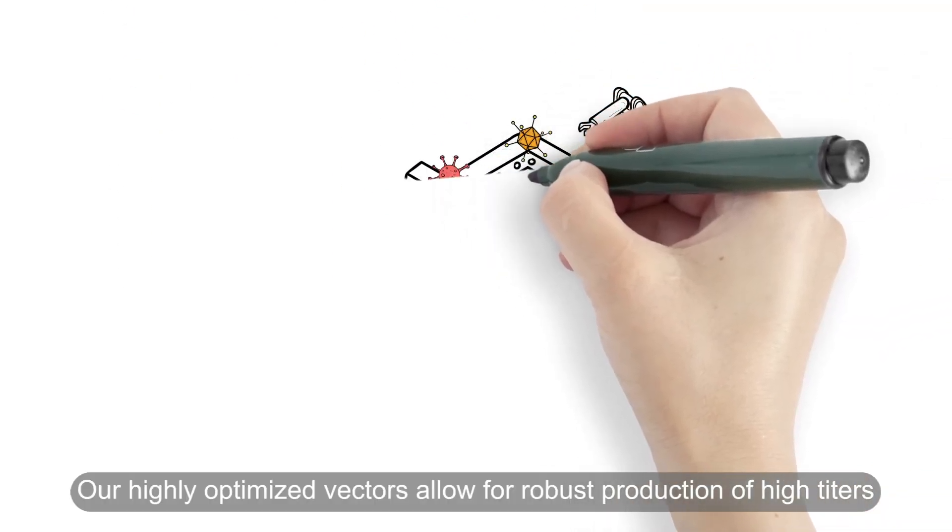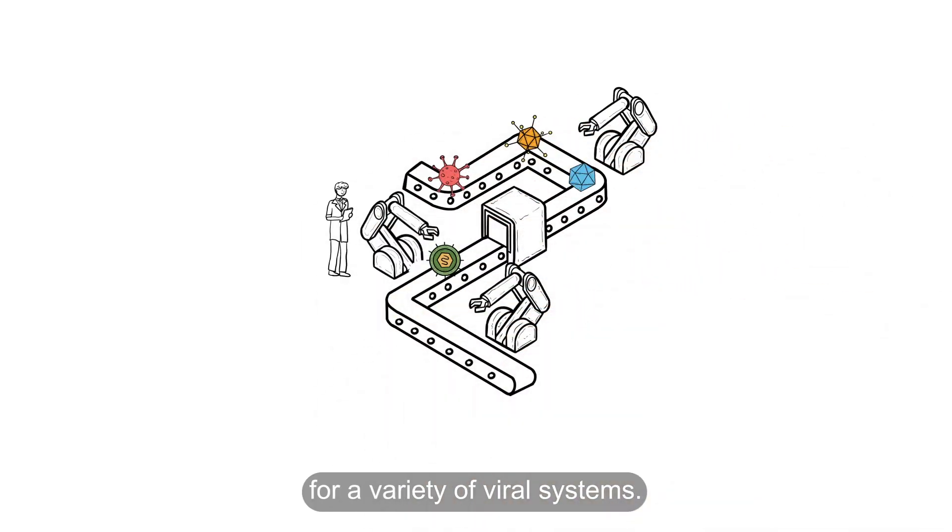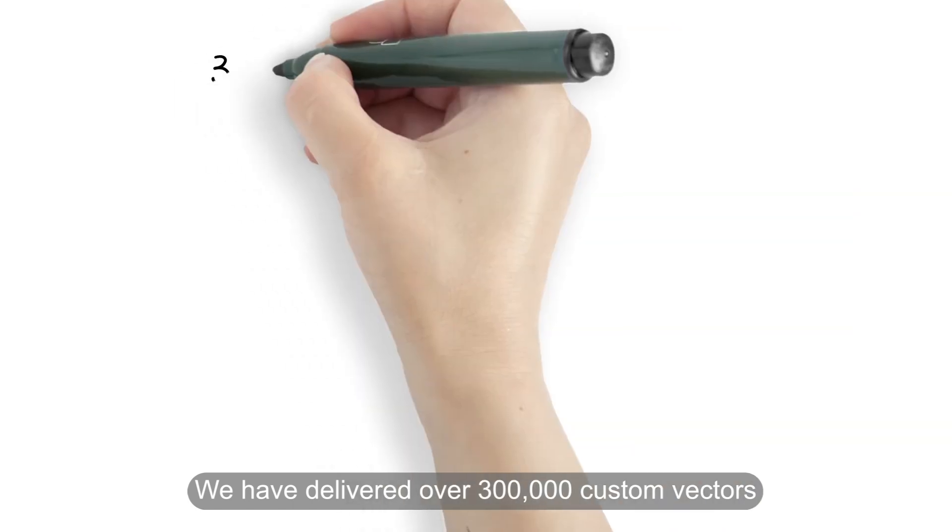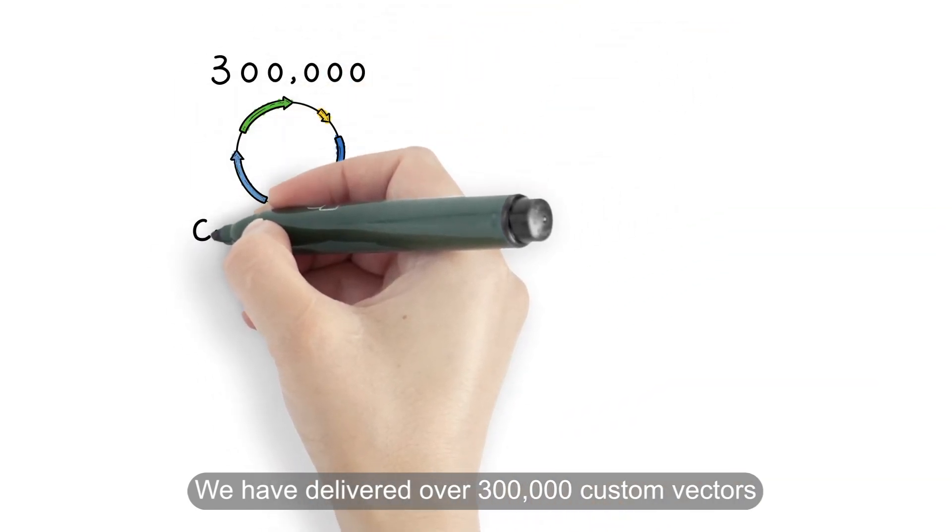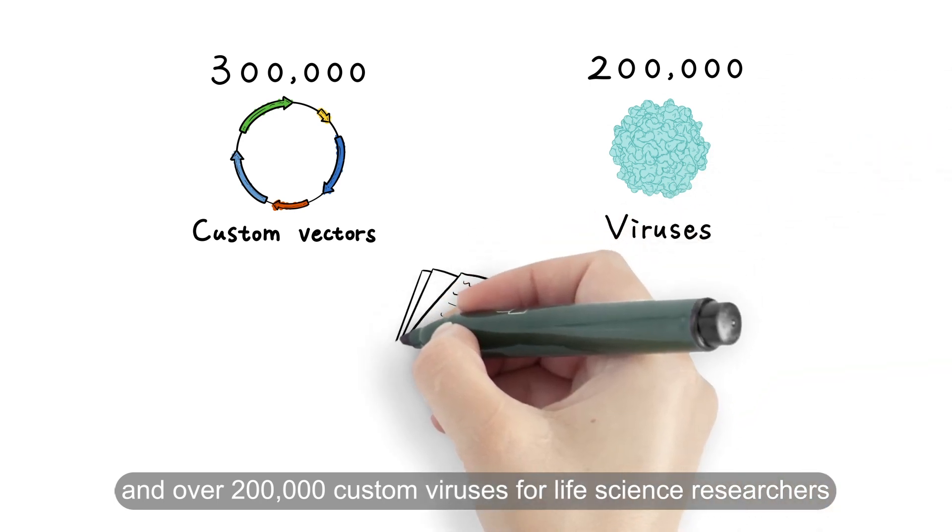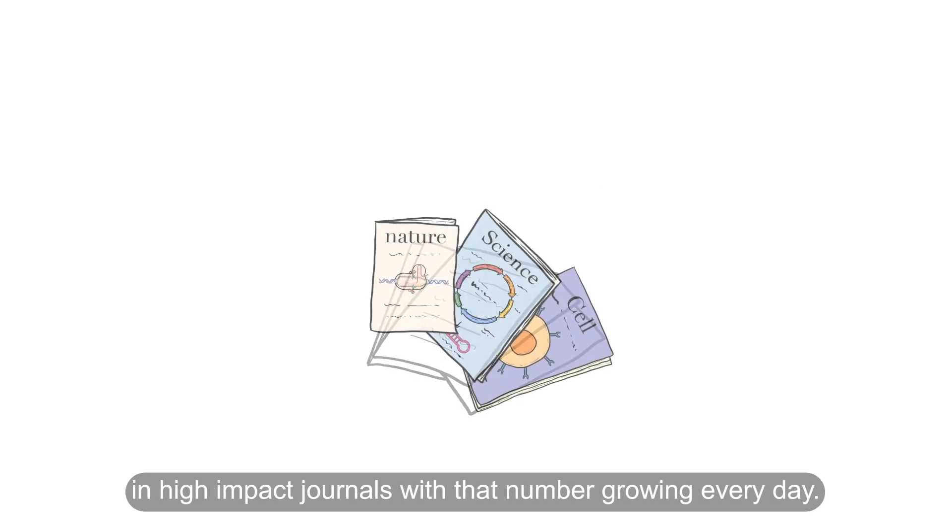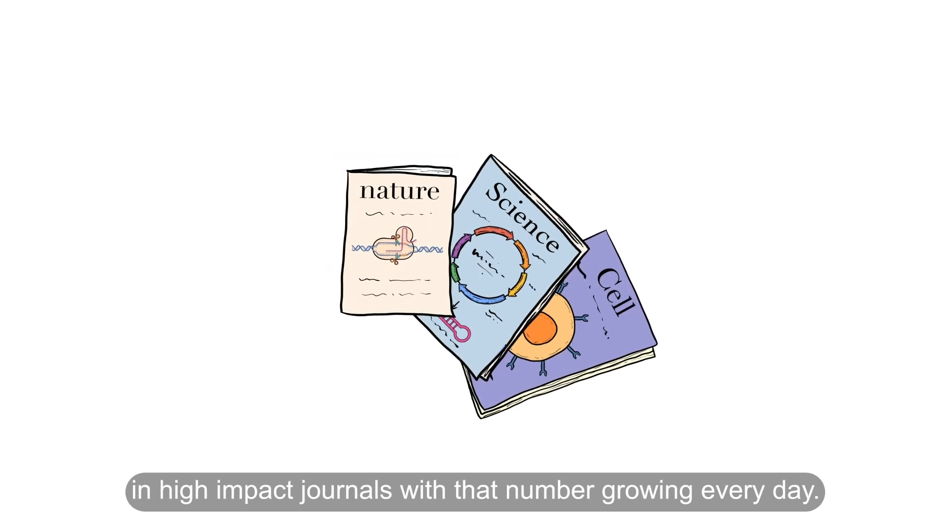Our highly optimized vectors allow for robust production of high titers for a variety of viral systems. We have delivered over 300,000 custom vectors and over 200,000 custom viruses for life science researchers, and our impact can be seen in our thousands of citations in high-impact journals, with that number growing every day.